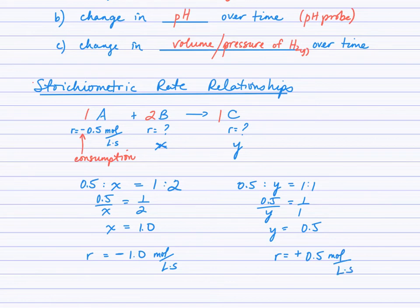Just to be clear, I'm choosing to put the negative or the positive in the final statement of rate based on whether it's a reactant being consumed or a product that's being produced.